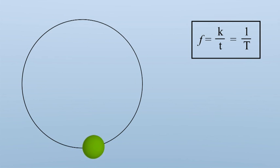A small example. If an object completes a circle five times in one second, then this motion has a frequency of 5 Hertz.